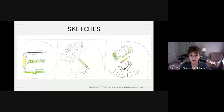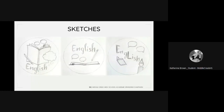I wanted my designs to encompass a variety of components that represent English. One logo illustrated someone reaching for a book to represent reaching for knowledge. Another showed a pencil exploding with English elements. The logo I chose to develop takes items like pens, pencils, and books and forms them into the shape of an 'E' for English. For other sketches, I incorporated reading, writing, conversation, and critical thinking through books, speech bubbles, writing tools, and thought bubbles. One sketch spells out ELA with a calligraphy pen at the end.